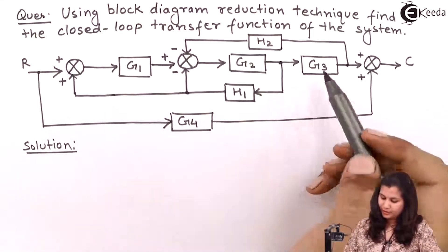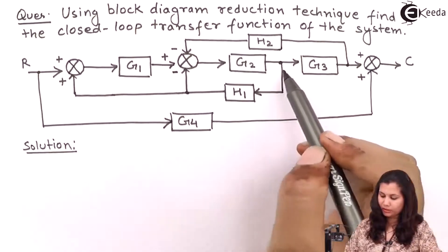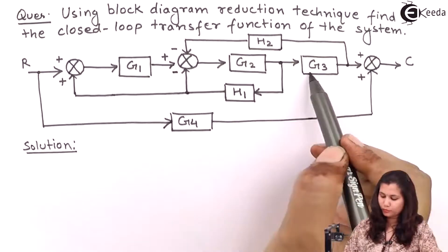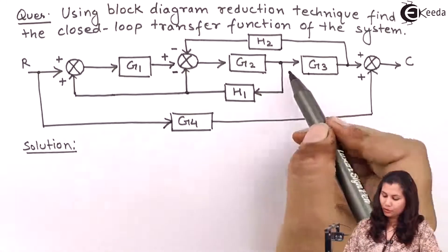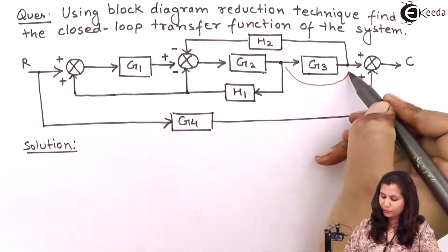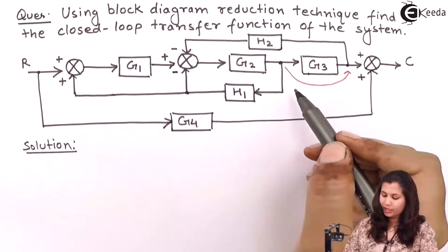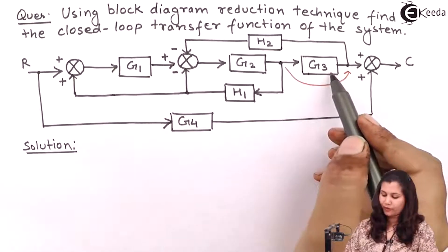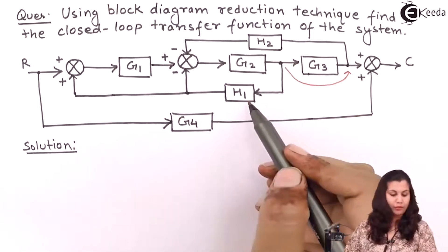If we move this takeoff point, which is before block G3, to a position just after this block, then these two blocks G2 and G3 will come in series. So let's shift this takeoff point from before the block to after the block. When we shift it, we have to divide the transfer function of block G3 from H1.